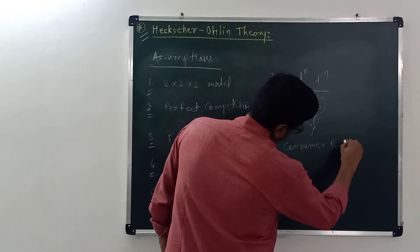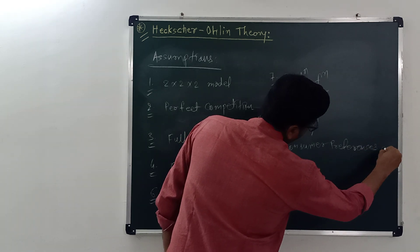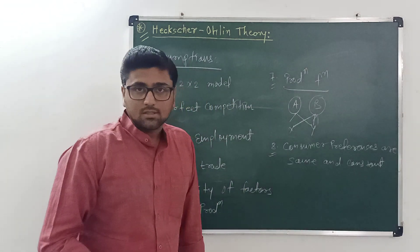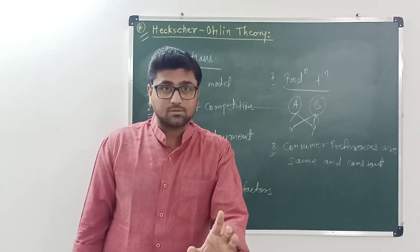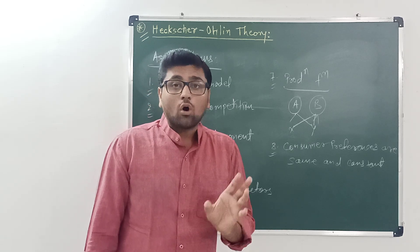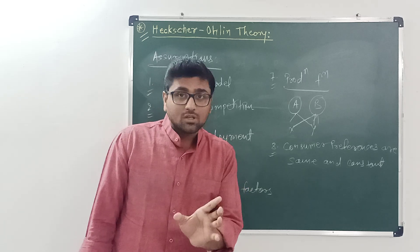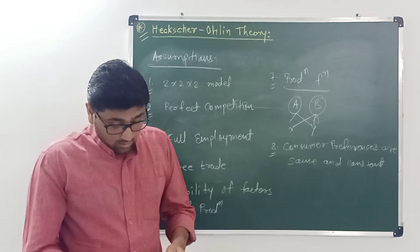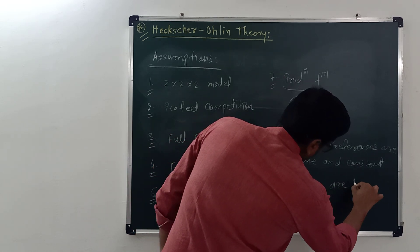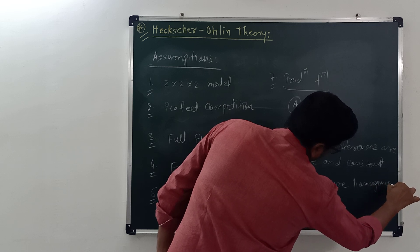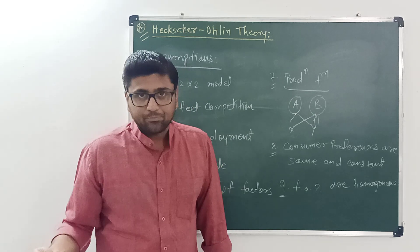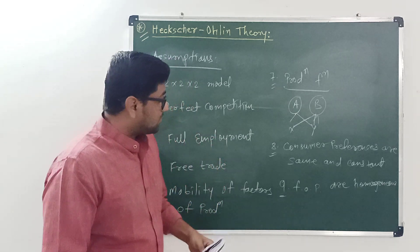The eighth assumption is that consumer preferences are the same in both nations. Consumer preferences can be depicted with the help of a community indifference curve, so when we draw a diagram, there is a single community indifference curve for both nations because we assume preferences are the same and constant. The ninth and last assumption is that factors of production are homogeneous, meaning the productivity of all units of each factor of production is the same.